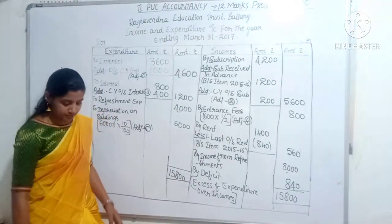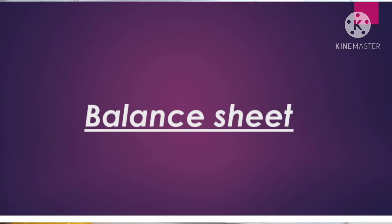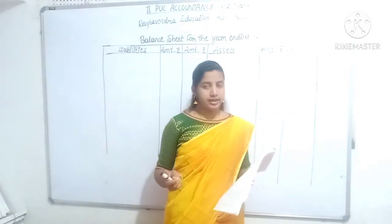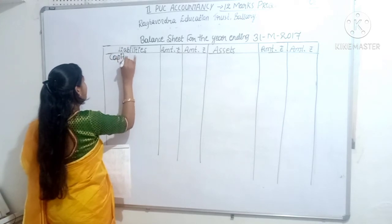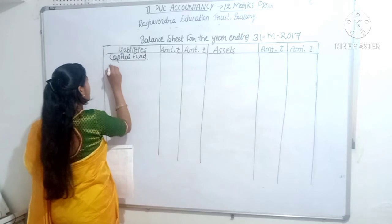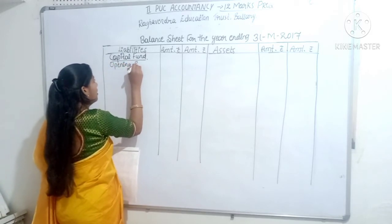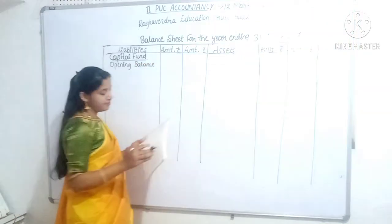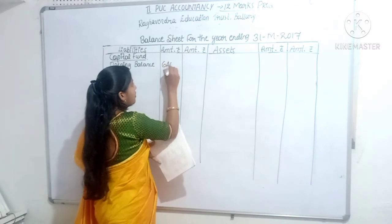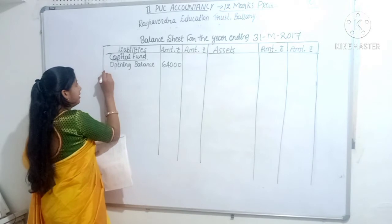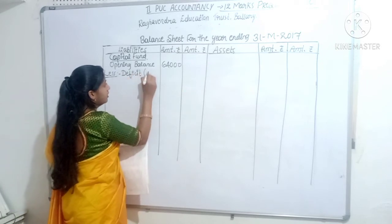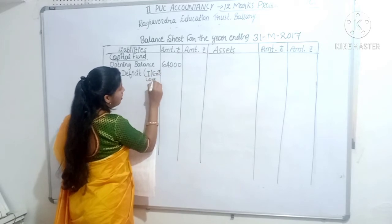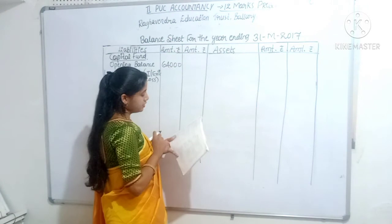Let's move on to the balance sheet. Balance sheet, liability side, first entry: capital fund. Opening balance amount Rs. 64,000 as given in the last year balance sheet. Less deficit: the income and expenditure account shows a loss amount - deficit Rs. 840.